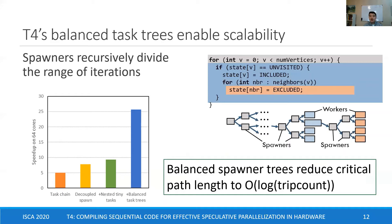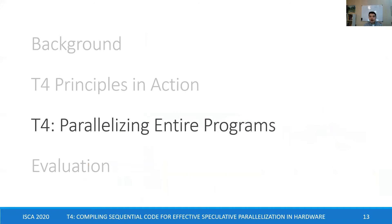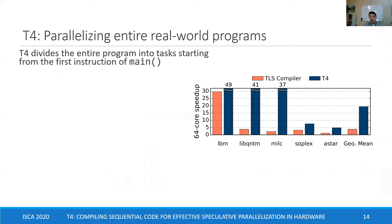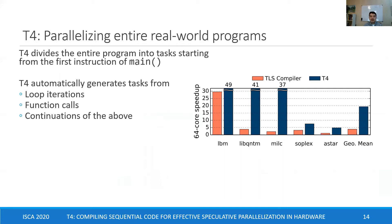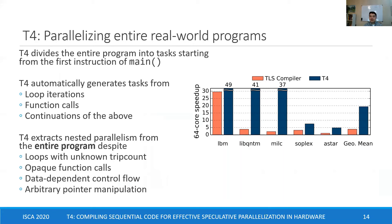But parallelizing entire real-world programs requires robust handling of more complex nested code patterns. T4 performs whole program parallelization, dividing the entire execution of sequential programs into tasks starting from the first instruction of main. T4 automatically builds nested task trees by dividing all loop iterations, function calls, and their continuations into tasks. T4's techniques can extract parallelism in a composable way, even in the presence of loops whose trip count is unknown, opaque function calls, data-dependent control flow, and pointer manipulation — common code features that defeat standard compiler analyses.